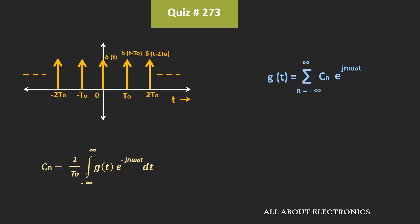this coefficient Cn can be given by this expression. Now here, this signal which is repeating itself is the unit impulse signal. So we can write this coefficient Cn as 1 by t0, integration,